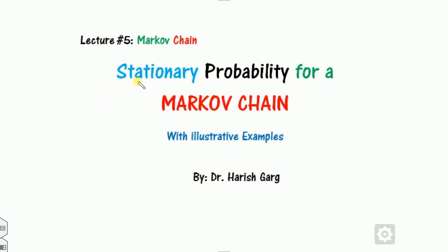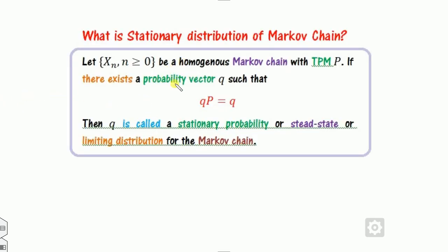First, I will explain what is the meaning of stationary probability and why we need the stationary probability distribution. The definition of the stationary distribution is: we look for a probability vector q such that when you multiply it with the transition probability matrix P, it remains the same. That is called the stationary distribution.